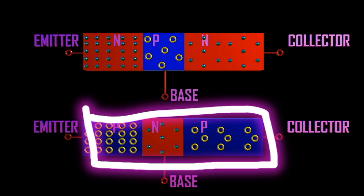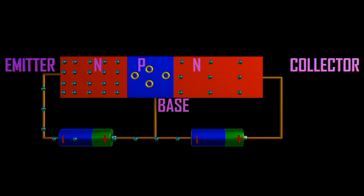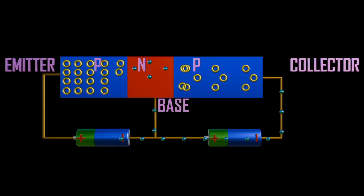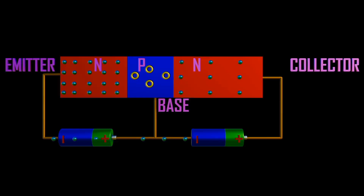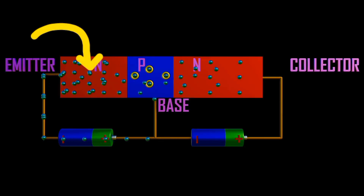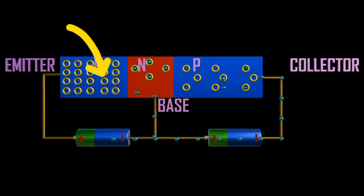The emitter is always forward biased with respect to the base, so it can supply either electrons or holes as carriers. In NPN, the emitter supplies electrons to its junction. In PNP, the emitter supplies holes to its junction.